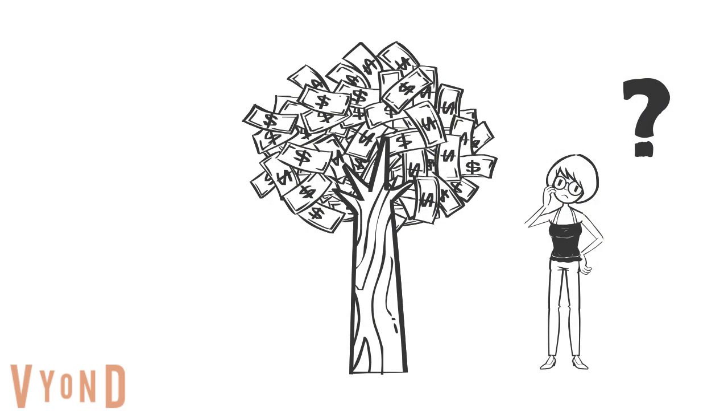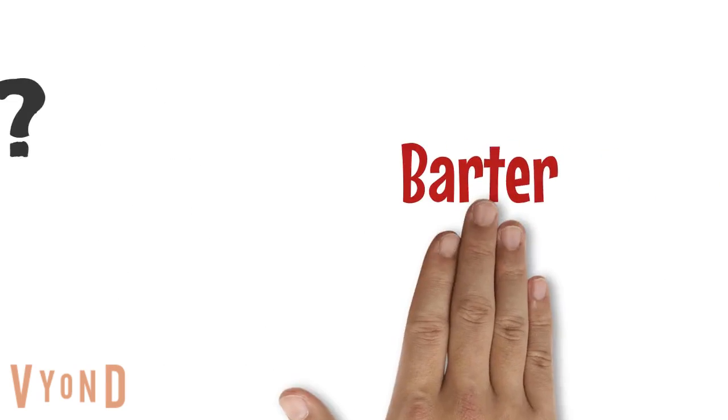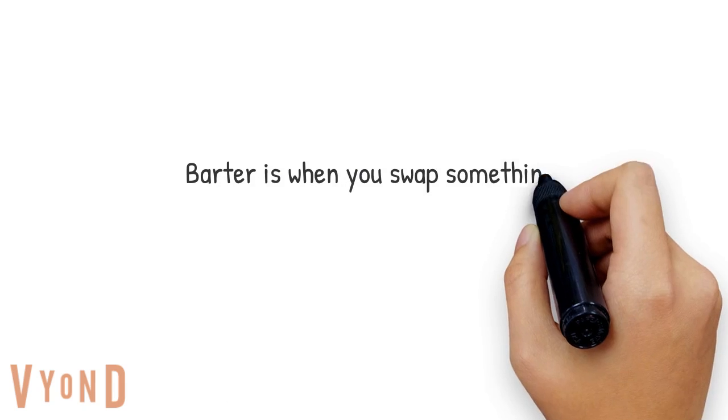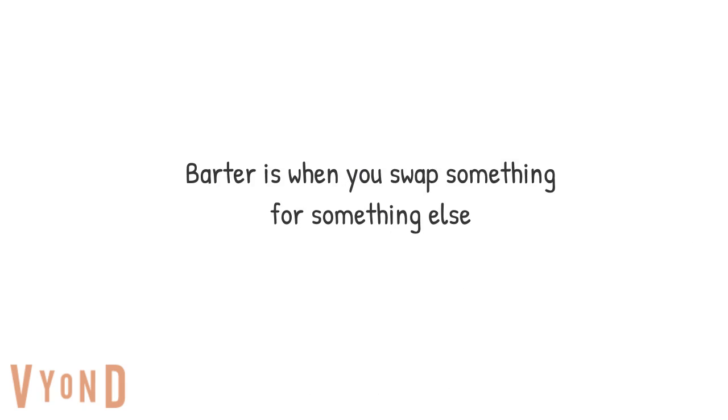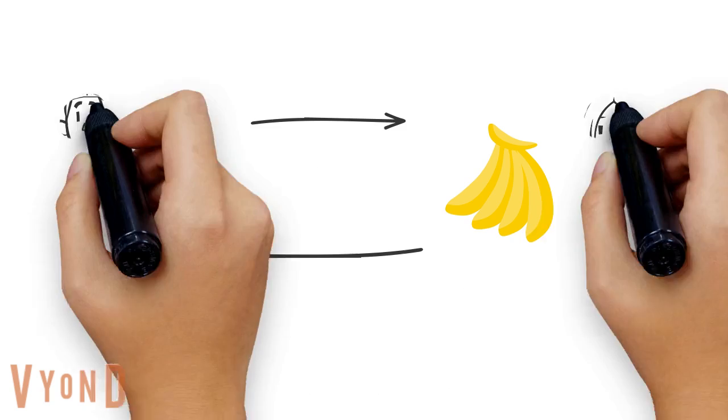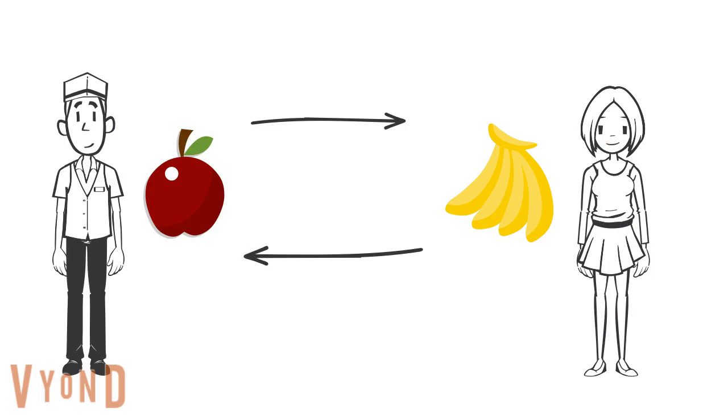Before money, many societies throughout history used a system called barter. Barter is when you swap one thing for something else.